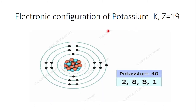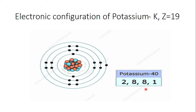Now consider the example of potassium, symbol K, with atomic number Z = 19. We arrange the electronic configuration with 2 in the first shell, 8 in the second shell, and then we have 9 remaining. Although the M shell can hold 18 electrons, the third rule states that if M is the last shell it cannot hold more than 8 electrons. So we give 8 to the M shell and the remaining 1 goes to the N shell.